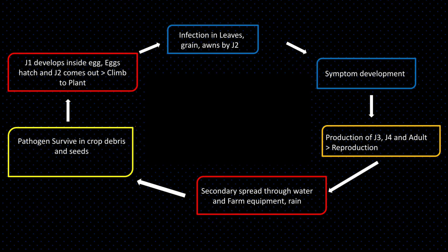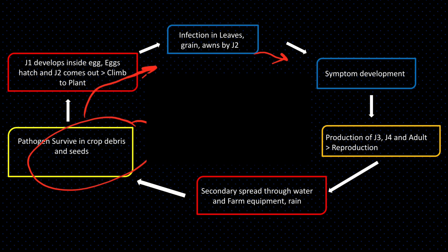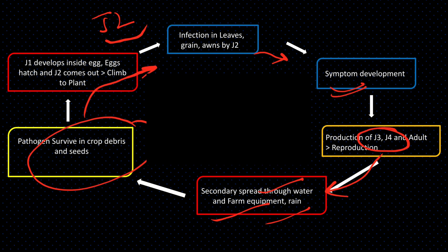In the disease cycle: the pathogen survives in crop debris and seeds. J1 develops inside seeds, J2 emerges and climbs the plant and causes infection — so if an exam question asks who causes infection, the answer is J2. J2 enters the plant and develops into J3 and J4. After J4, adults form, male and female mate, eggs are produced, and the cycle continues.